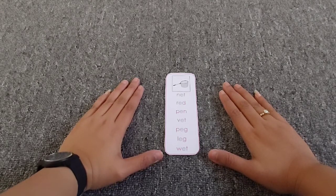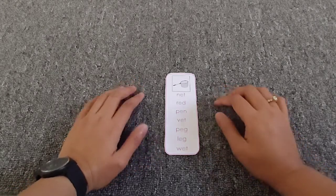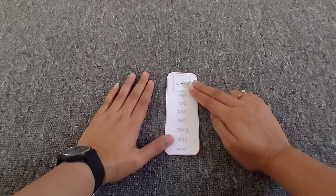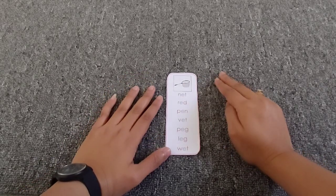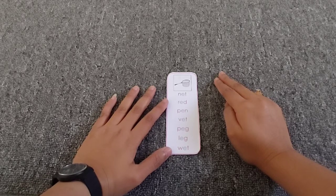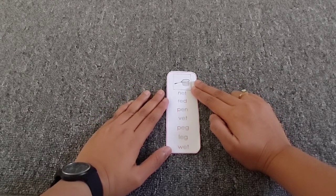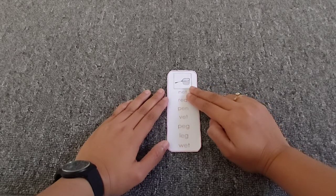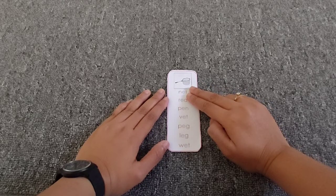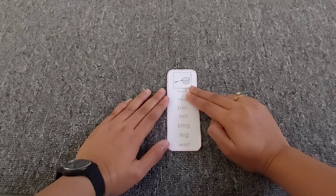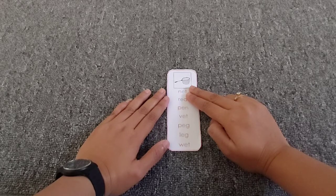But before that, Miss Lydia wanted to ask you, can you tell Miss Lydia what picture is this? Yes, yes, you are correct. This is a picture of a net, net. And this is how the word net is written. Now let's try to spell the letter one by one.